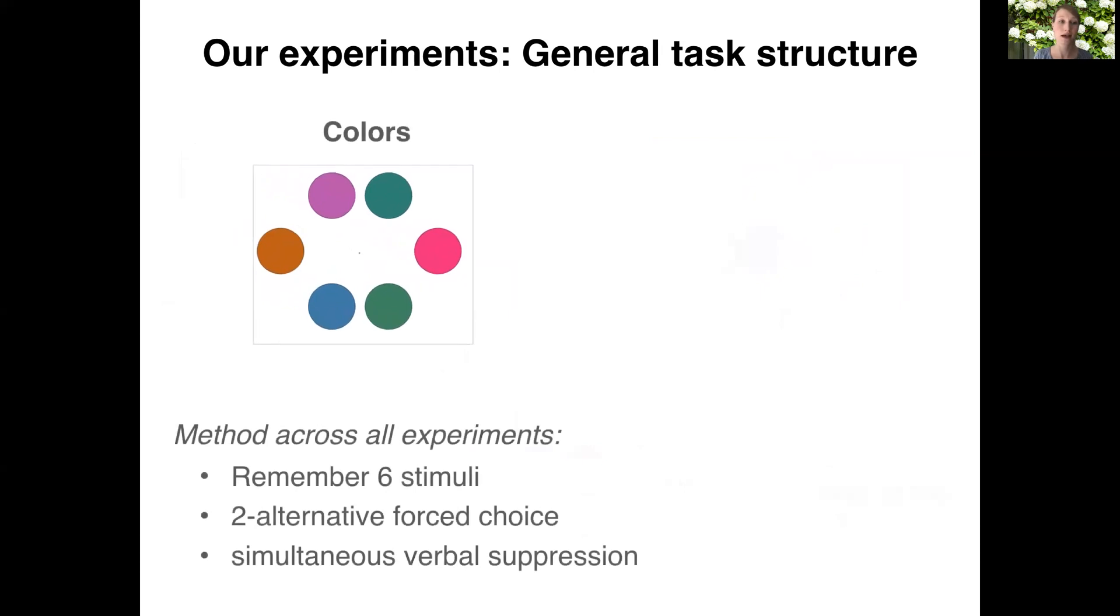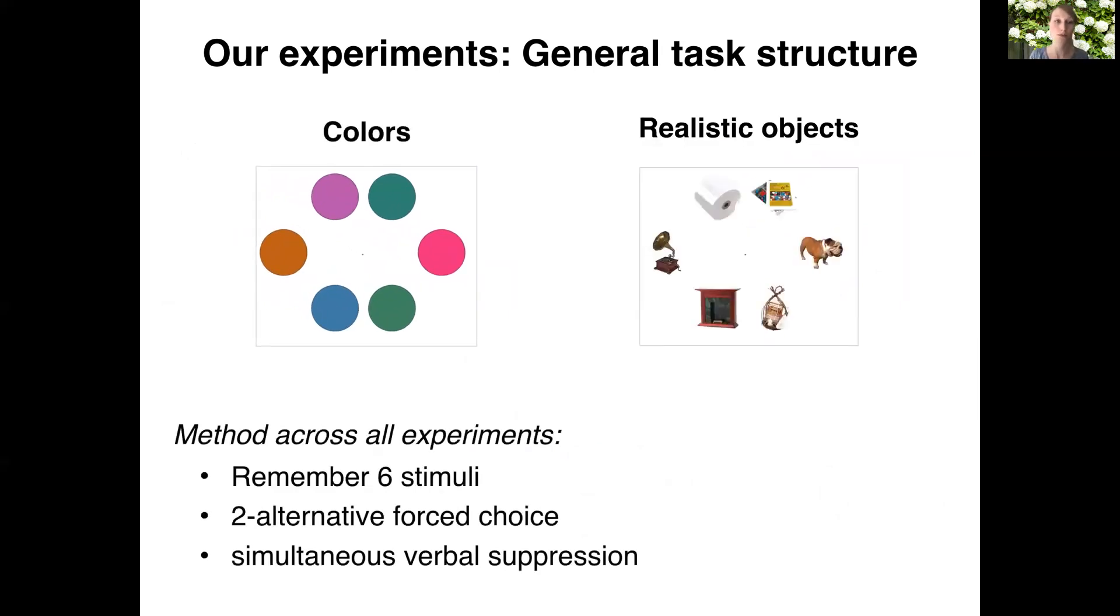We contrast these color displays with displays that use real-world objects. And in all the tasks that I'll be presenting today, we ask participants to remember six stimuli, use this two-AFC method, and we also have participants do simultaneous verbal suppression tasks to limit the ability to use verbal encoding or labeling strategies.